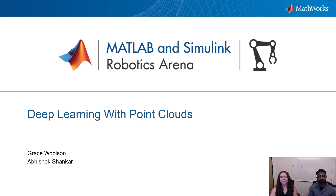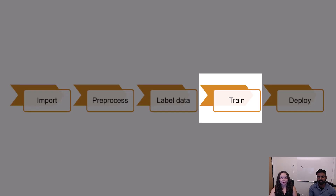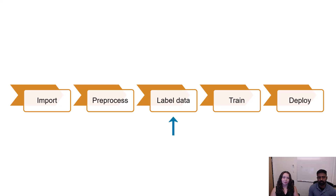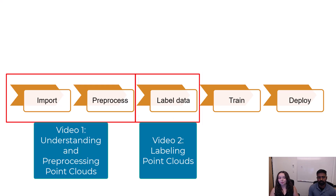Welcome back to our series on deep learning for 3D object detection. In this video, we're going to show how you can use deep learning to train an object detector. In order to do this, we have first cropped point clouds, split the data into a training and test set, and labeled the objects in each set. To learn more about these steps, check out the previous videos in this series.